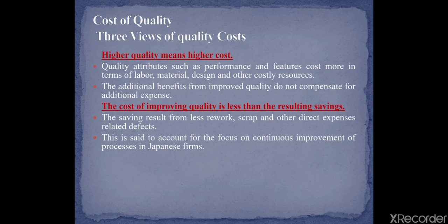Now the three views of cost of quality. The first view: higher quality means higher cost — quality attributes such as performance and features cost more in terms of labor, material, design, and other costs. The second view: the cost of quality is less than the resulting savings from less rework, scrap, and other direct expenses related to defects. This accounts for the focus on continuous improvement of process in Japanese firms.